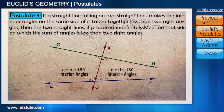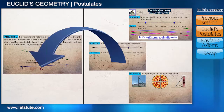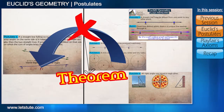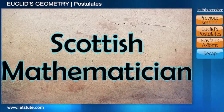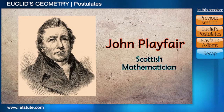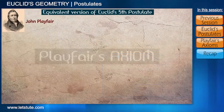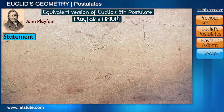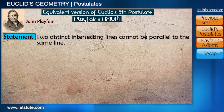Euclid's fifth postulate has been studied extensively in geometry, and many mathematicians tried to prove the fifth postulate using the first four postulates to make it a theorem. But all the efforts were vain. Then there was one Scottish mathematician named John Playfair. He made an equivalent version of Euclid's fifth postulate named Playfair's axiom, which states that two distinct intersecting lines cannot be parallel to the same line.